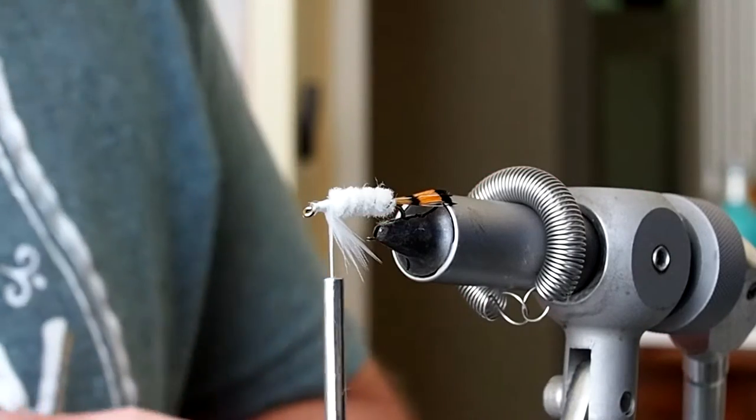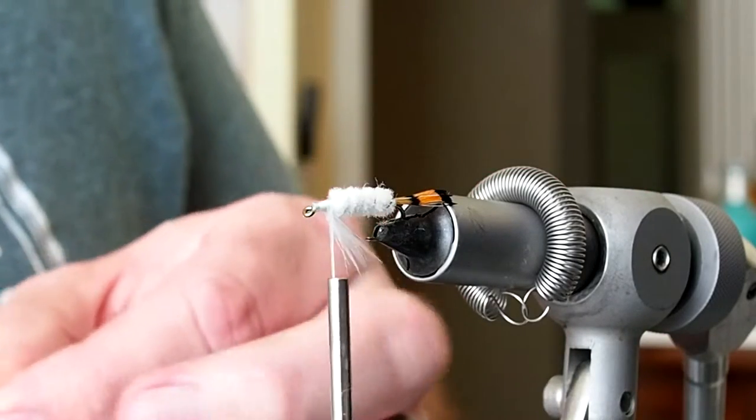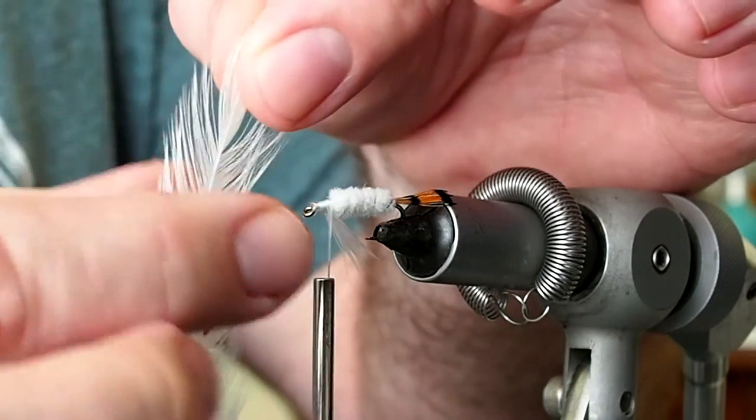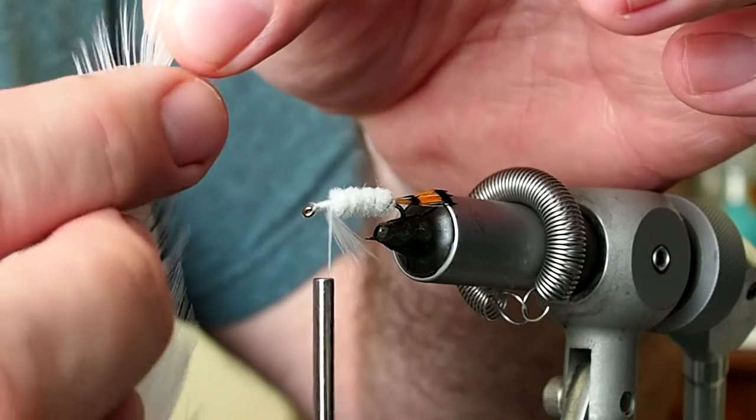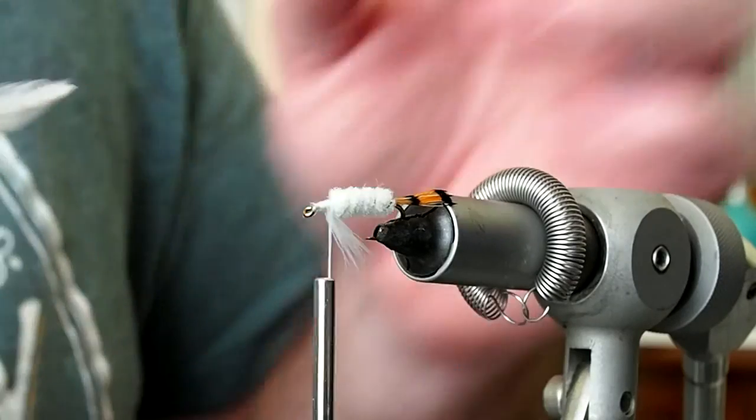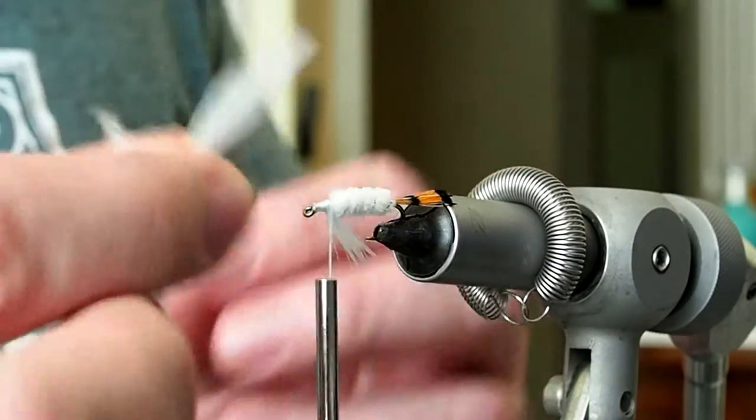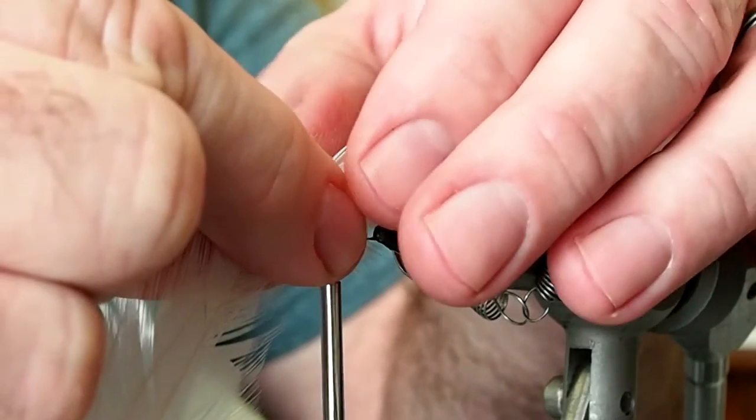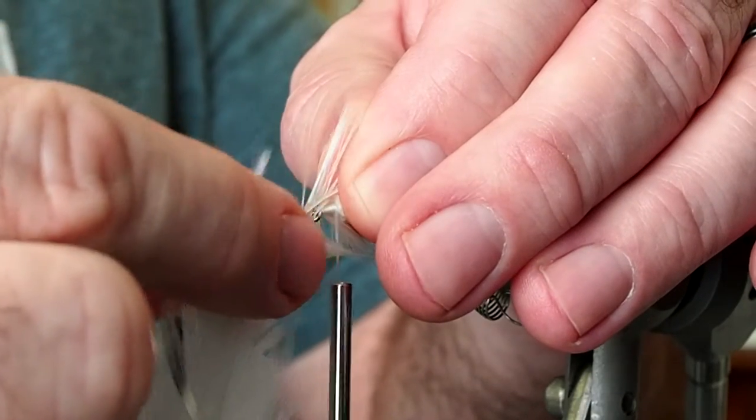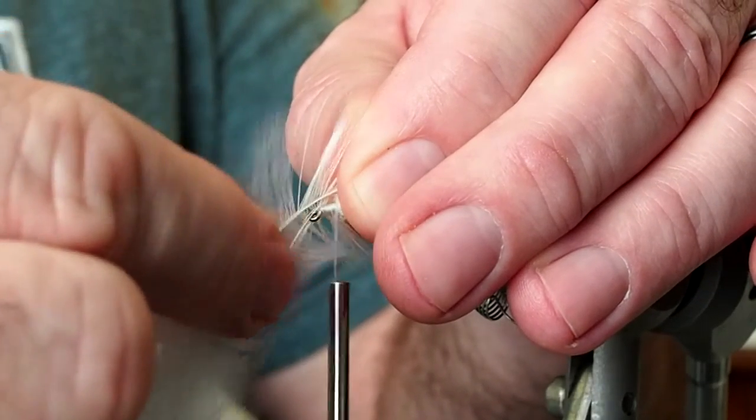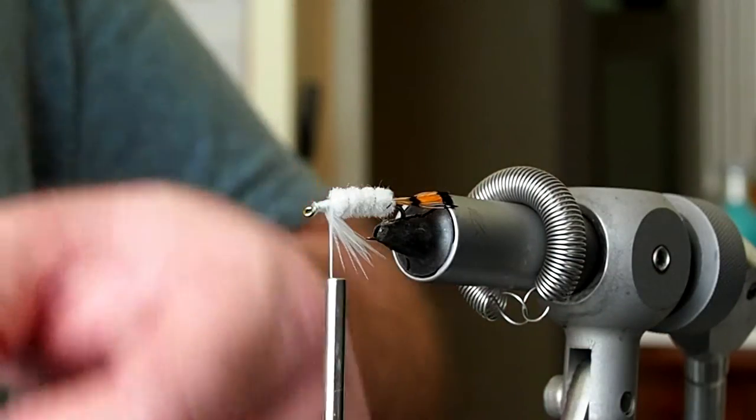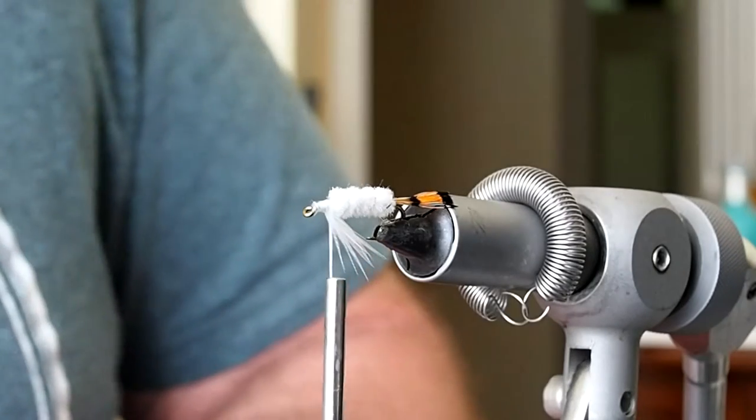Next we're going to tie on a wing. I'm going to use two saddle hackle feathers that are pretty well matched. We only need the tip of the feather but we need to measure the distance or length of the wing. Your wing should be about the length of the tail. I'm just going to peel back some of the barbs so I know where to trim the feather.